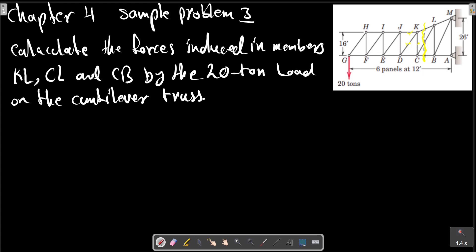When we make a section here, we have two parts: the left part and the right part, with the angle theta, which is equal to tangent theta equals to 2.6 inches minus 16 — that is the distance.